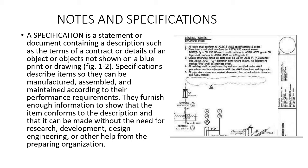So here's what a note or a specification looks like. You can see they've got all kinds of information in here. All welding shall be performed by welders certified under AWS procedures in conformance with AWS structural welding code. Those are the kinds of things you put in there. A specification is a statement or a document containing a description such as terms of a contract or details of an object or objects not shown on a blueprint or drawing. Specifications describe items so that they can be manufactured, assembled, maintained according to their performance requirements. They furnish enough information to show that the item conforms to the description and that it can be made without the need for research, development, design engineering, or other help from the preparing organization.